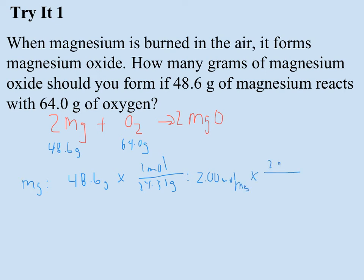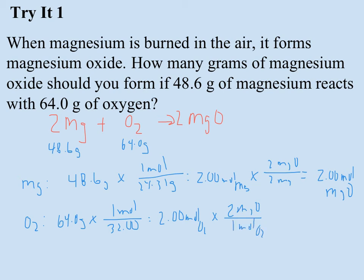Since I get 2 moles of MgO from 2 moles of Mg, this is also how much MgO I can make from my magnesium. So then let's see what my oxygen can do. My oxygen is 64 grams. O2 has a mass of 32. So this is also 2 moles.